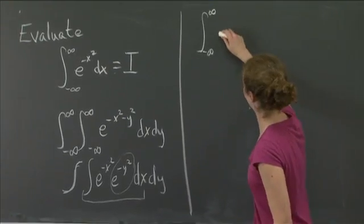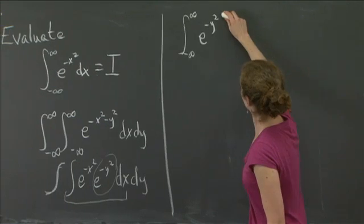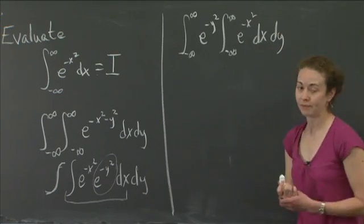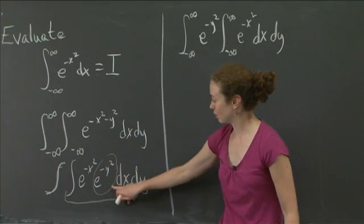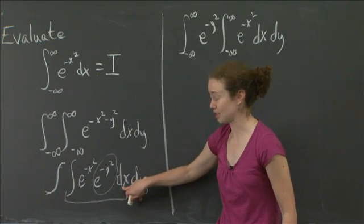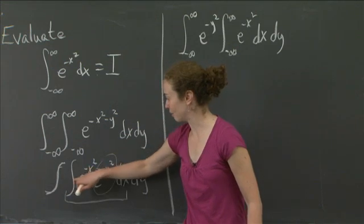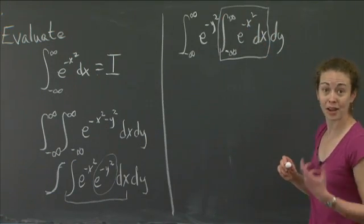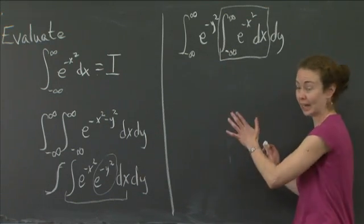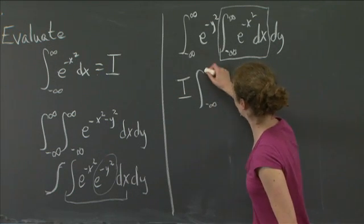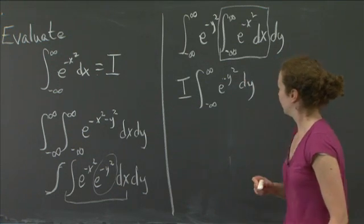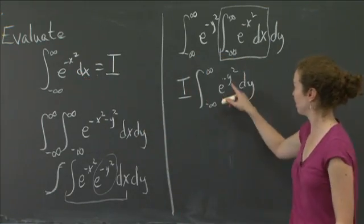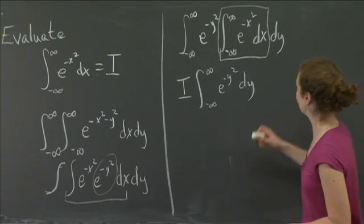Let me rewrite: the integral from minus infinity to infinity of e to the minus y squared, times the integral from minus infinity to infinity of e to the minus x squared dx, dy. This quantity I circled was a constant when I consider x the variable. So I can move it in front of the dx integral. That quantity is what I've called I. And the remaining integral from minus infinity to infinity of e to the minus y squared dy is also equal to I. So the whole thing equals I squared.